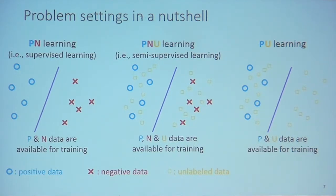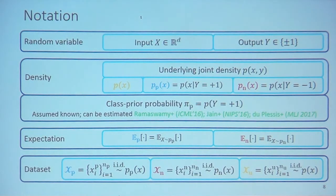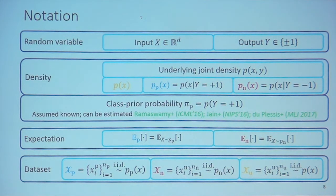PU learning is very difficult because, even though we may have more positive data than in semi-supervised learning, we have no single negative data. However, we still want to identify the correct decision boundary. Here is the notation: we have random variables for input and output, and densities where P(X,Y) is the underlying joint density. All densities are derived from this. P(X) is the marginal where we draw unlabeled data, P_P(X) is the positive class conditional, and P_N(X) is the negative class conditional.